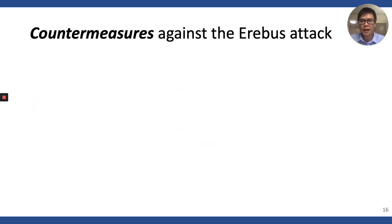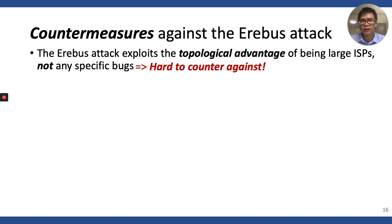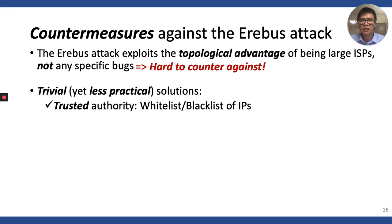Now we discuss countermeasures against the EREBUS attacks. We note that the EREBUS attacks exploit no software bugs, but only the topological advantage of being a large ISP — specifically being the man-in-the-middle of a large number of IP addresses for several weeks. Hence, the EREBUS attack is hard to counter. There exist some trivial but not so practical solutions, such as maintaining a trusted authority — for example, some whitelisted nodes. However, the permissionless design of the Bitcoin network may be violated.